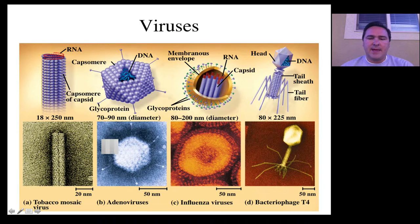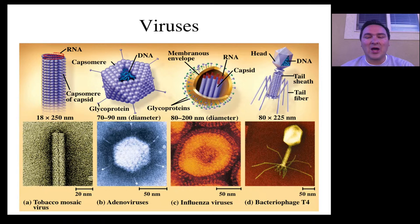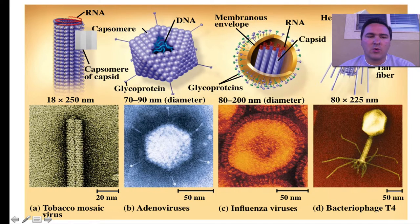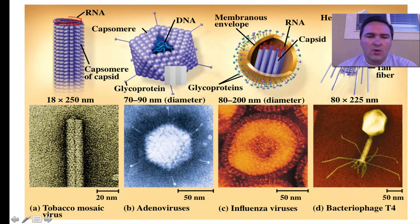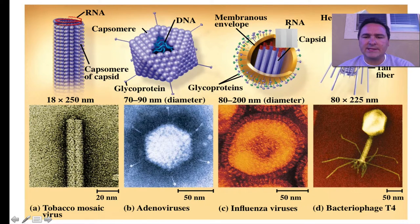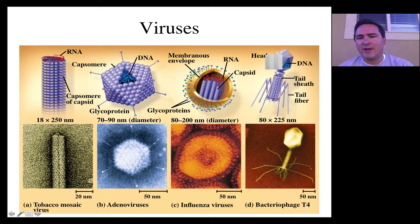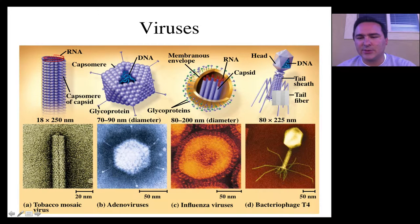Viruses are this amazing group — some people would classify these things as organisms, others would not — but there are these biological entities that can be very simple, such as over here where you have just an RNA coil with these capsomeres around it, these capsids, or they can be much more complicated. They can have multiple capsids on the inside of a membranous envelope. They can even have a shape where you have a head with the DNA on the inside, and then a tail and tail fibers that are used basically as an injection tube. So there's really quite a huge variety of viruses.